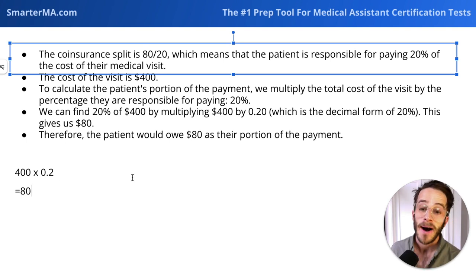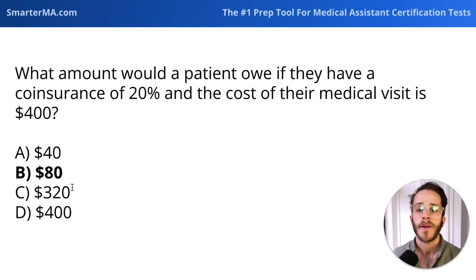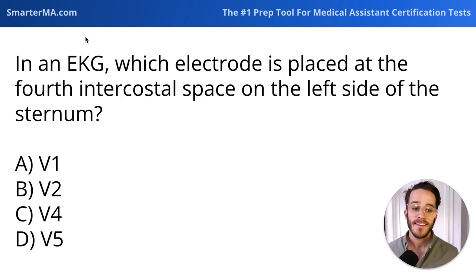That is the simplest way of doing this calculation. Therefore, this patient would owe $80, which is the 20% coinsurance of $400.